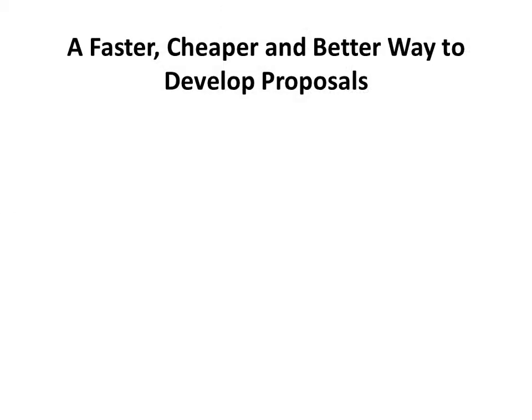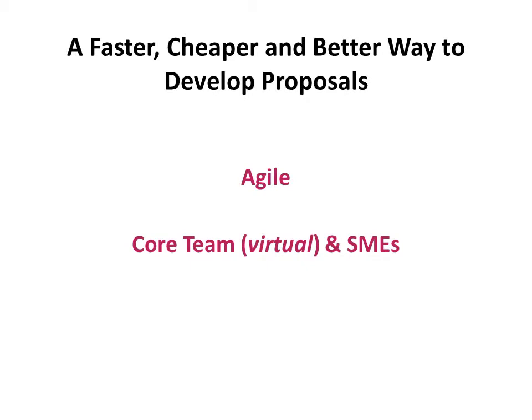How can we build better proposals, faster and cheaper? Use Agile to develop consistent content with a transparent process. Assemble a virtual core team with a strong procedural focus and basic IT tools to provide presence and a central knowledge base, with part-time support from capable subject matter experts. Utilize prior proposals to create 80% of the content for common plans such as compensation, staffing, quality, IT security, property, or safety.